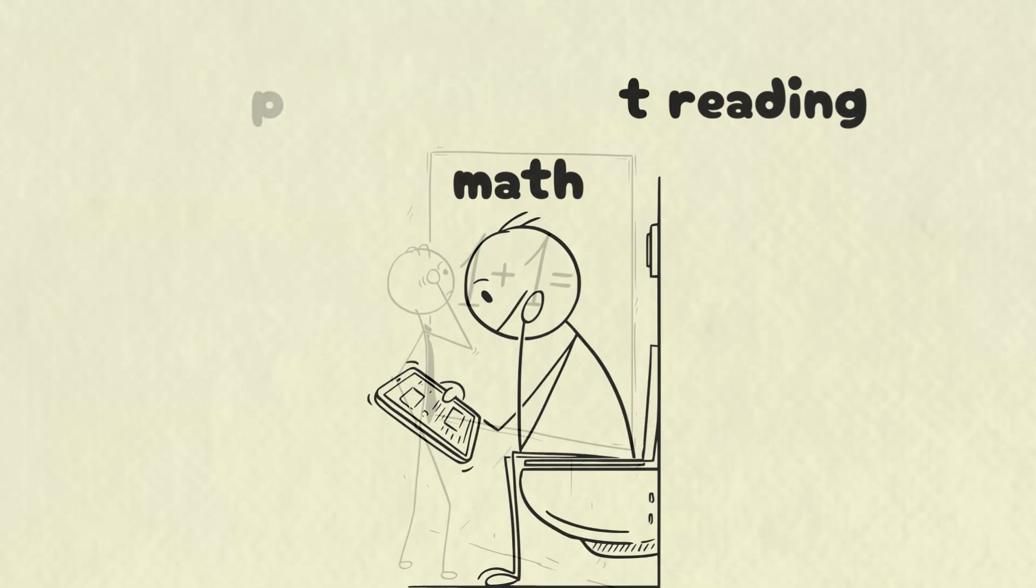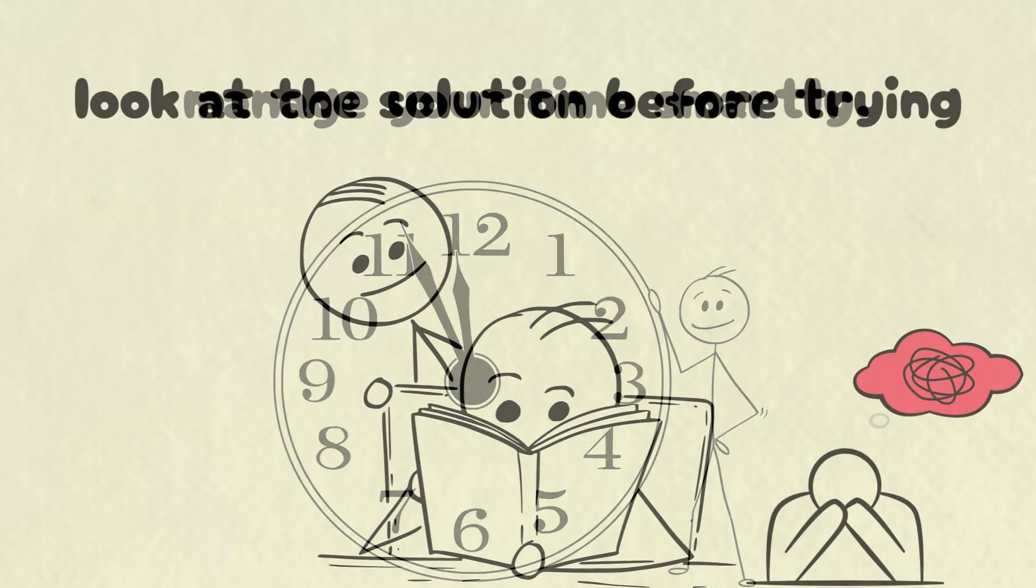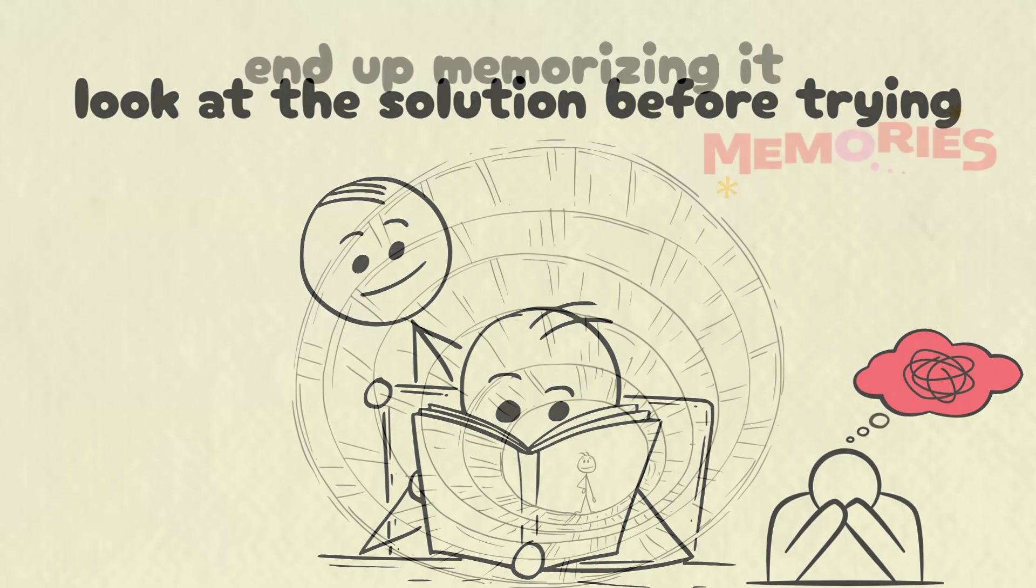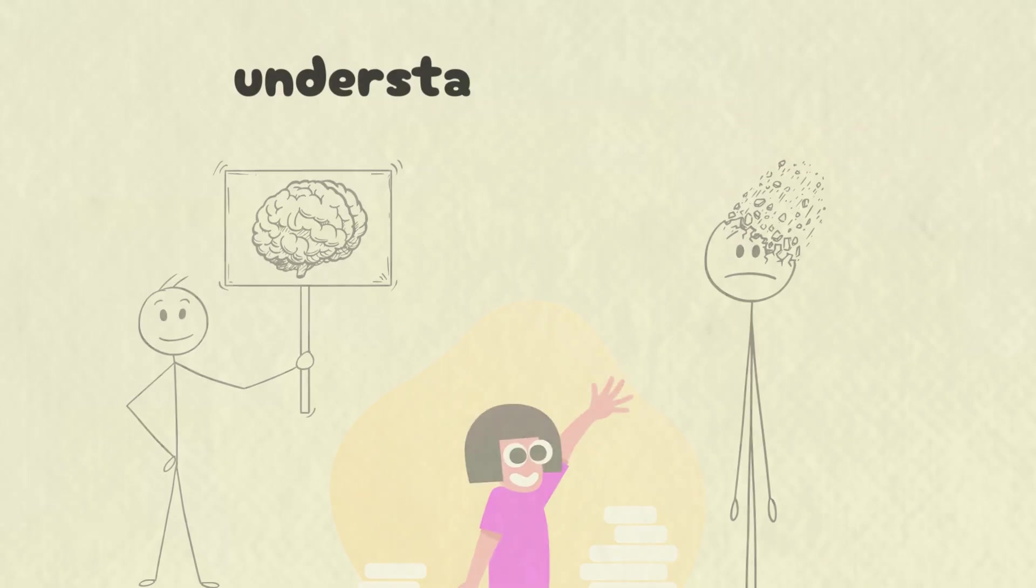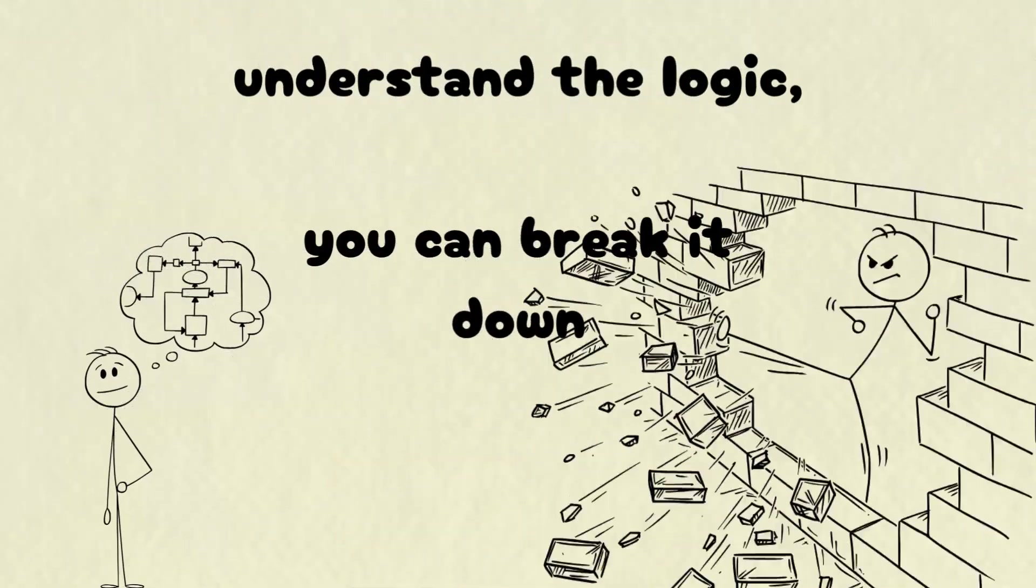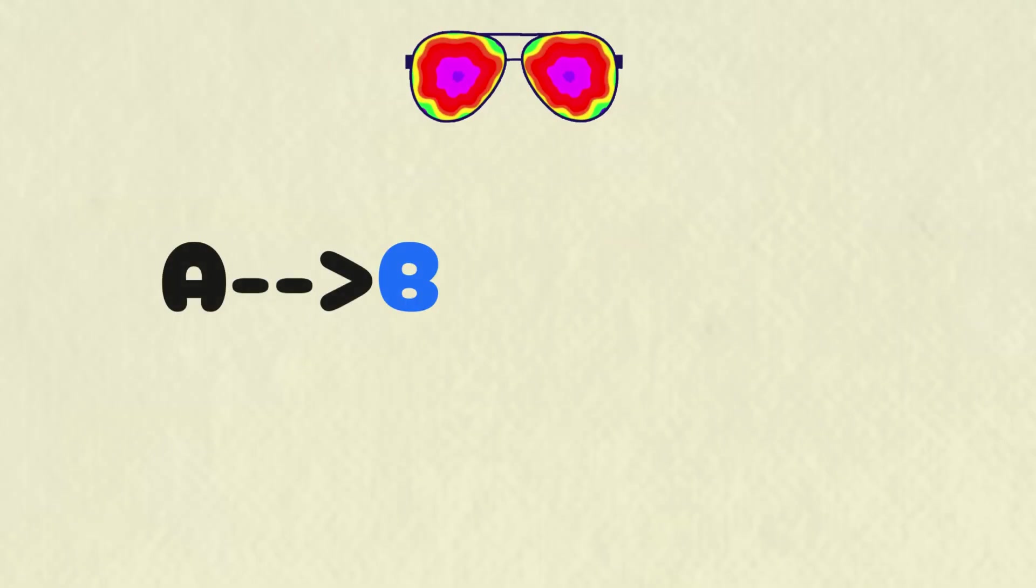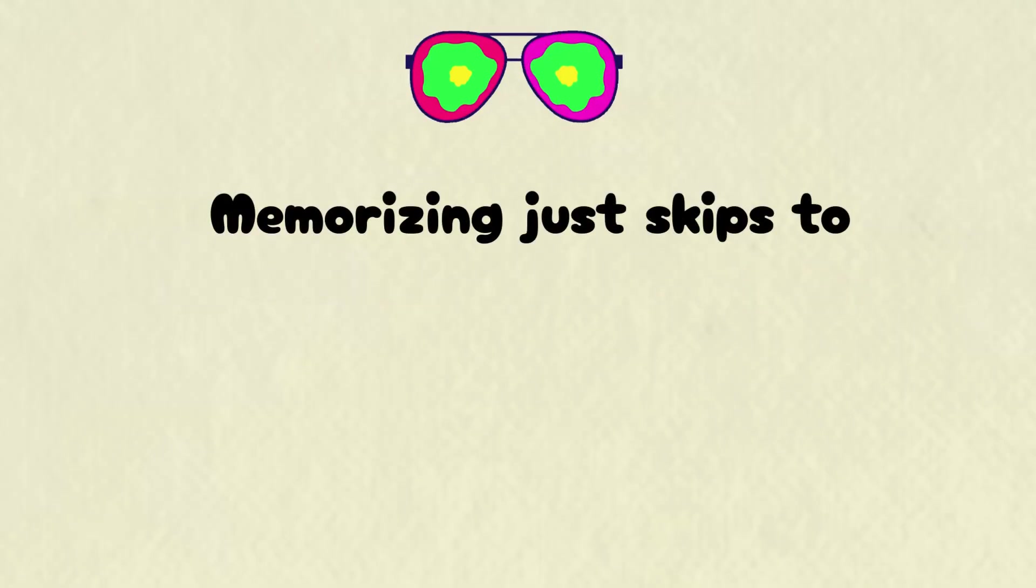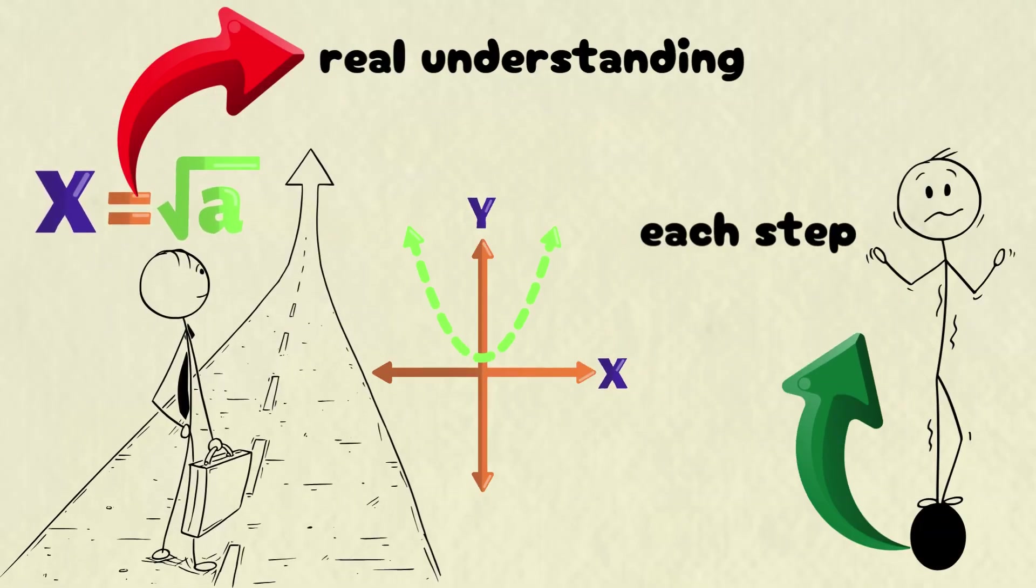Don't rely on just reading math. Practice it actively and manage your time smartly. Some people worry that if they look at the solution before trying, they'll just end up memorizing it. But understanding isn't the same as memorizing. If you truly understand the logic, you can break it down. A leads to B, B leads to C, and C leads to D. Memorizing just skips to A leads to D. But real understanding means you can walk through each step with clarity.